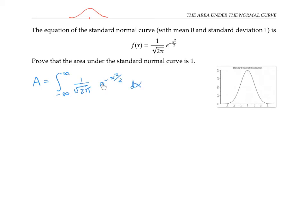Now this function, e to the minus x squared over 2, is notoriously difficult to integrate. In fact, it has no elementary antiderivative; there's no simple way to integrate it. So here's the trick.